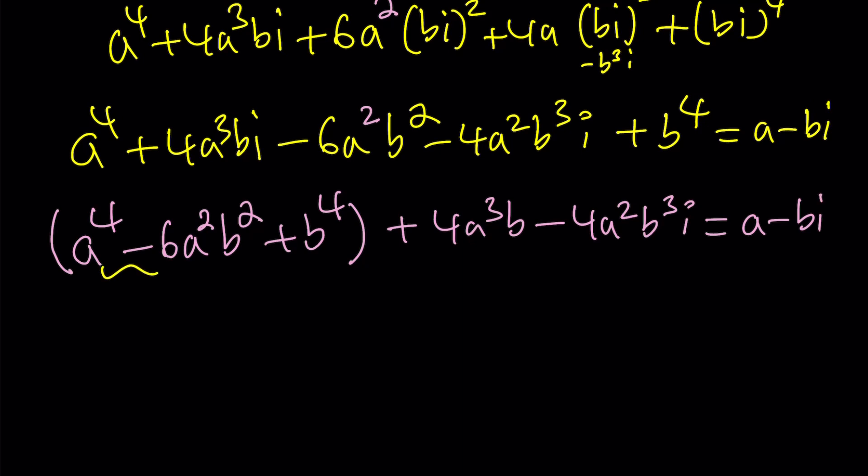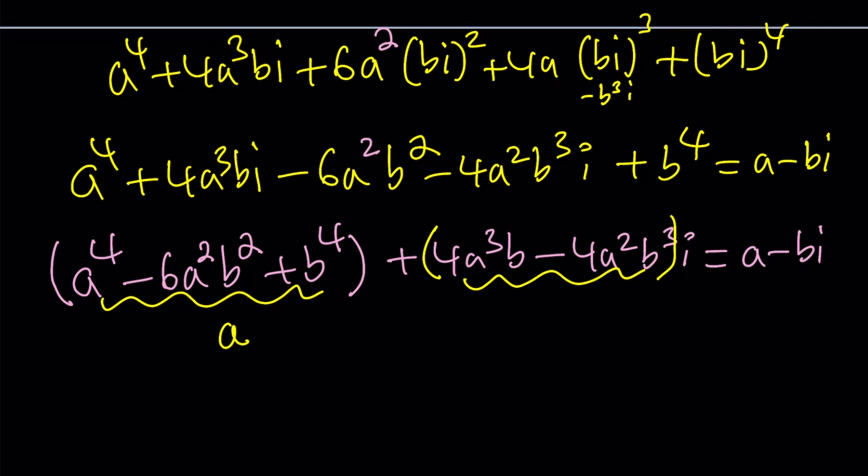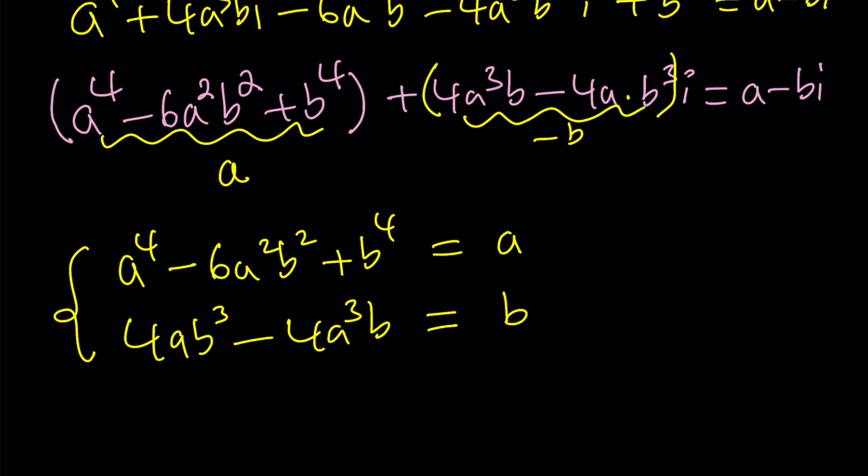Now the real part needs to equal real part which is A. The imaginary part should be 4A cubed B I minus 4A B cubed I. This is supposed to equal negative B. So we got the following system of equations. A to the fourth minus 6A squared B squared plus B to the fourth equals A. And we can actually negate both sides if you want and write this as 4AB cubed minus 4A cubed B is equal to positive B.